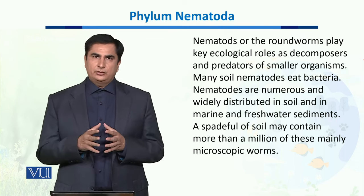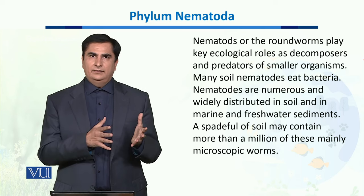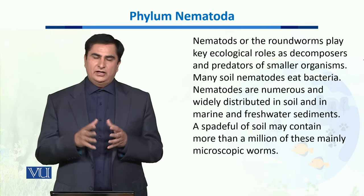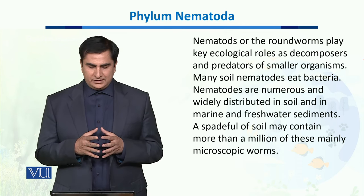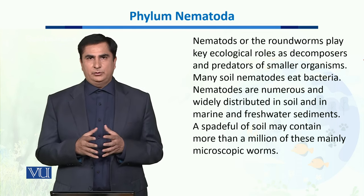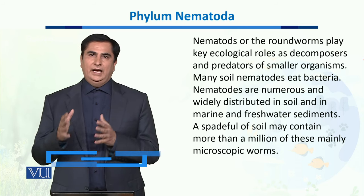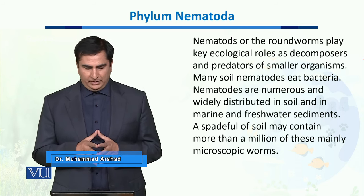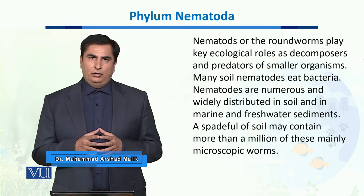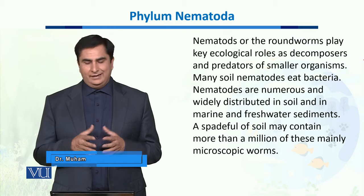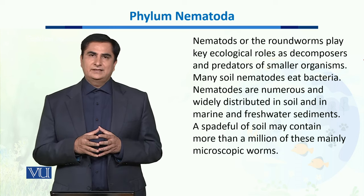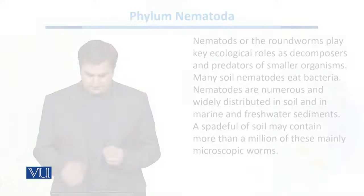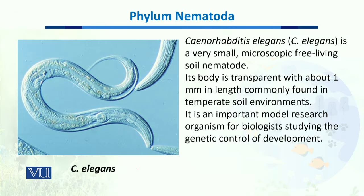Many of these nematodes eat bacteria and other species including fungi. Nematodes are numerous and widely distributed in soil as well as in marine and freshwater environments. A spade full of soil may contain more than millions of these microscopic nematode worms. One classical example of phylum Nematoda is Caenorhabditis elegans, or C. elegans, which is a very small microscopic free-living soil nematode.